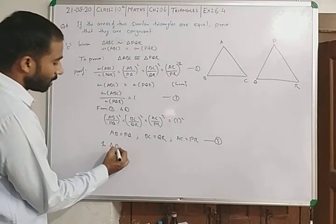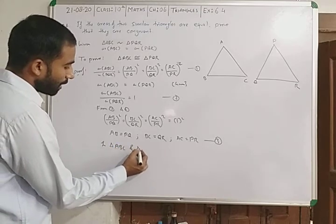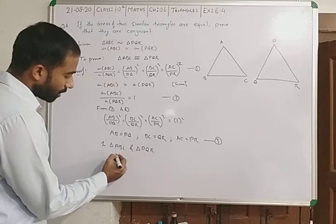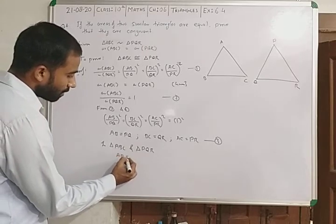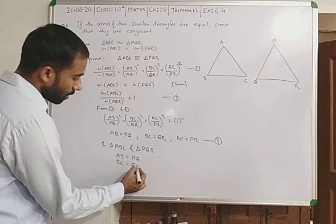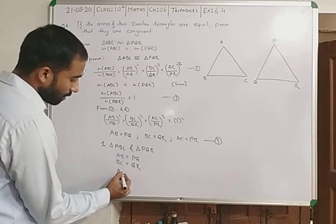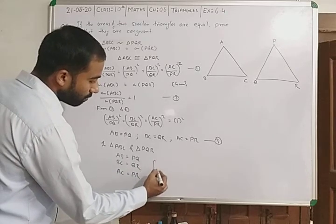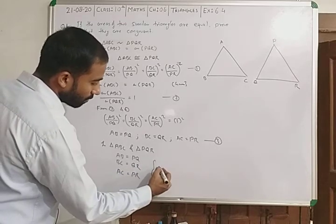Now: in triangle ABC and triangle PQR, all sides are equal. AB is equal to PQ, BC is equal to QR, and AC is equal to PR from equation 3.